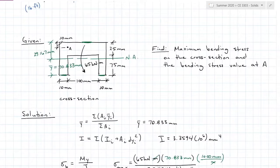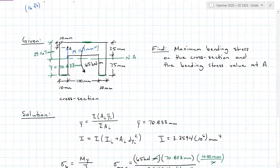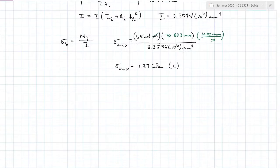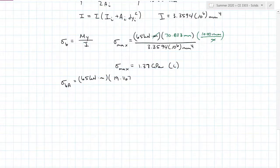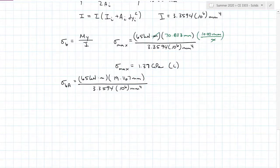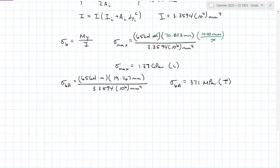Next is point A. The distance from point A to the neutral axis is 19.167 millimeters. The only thing that changes in the bending stress equation is that distance y. So my bending stress at A is 65 kilonewton-meters times 19.167 millimeters, all over the centroidal inertia 3.3594 times 10 to the sixth millimeters to the fourth, giving a bending stress at A equal to 371 megapascals. Point A is in tension because it is above the neutral axis.